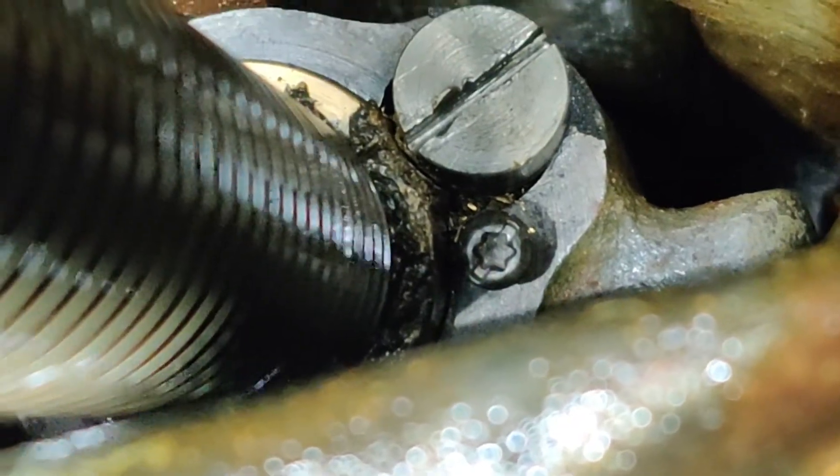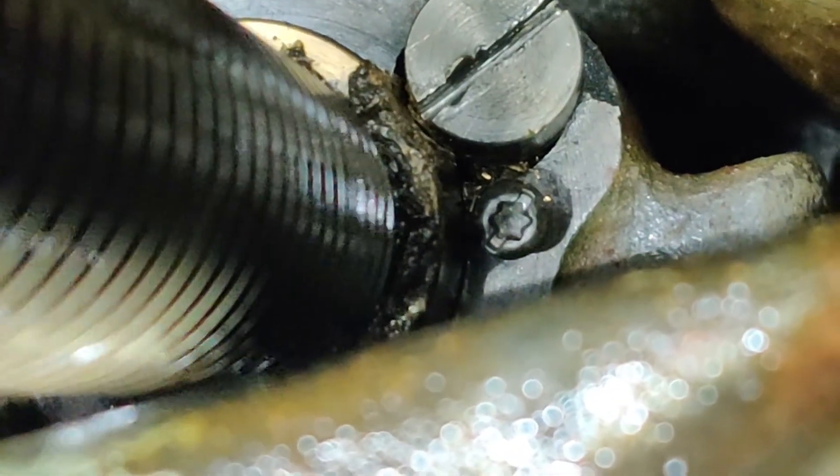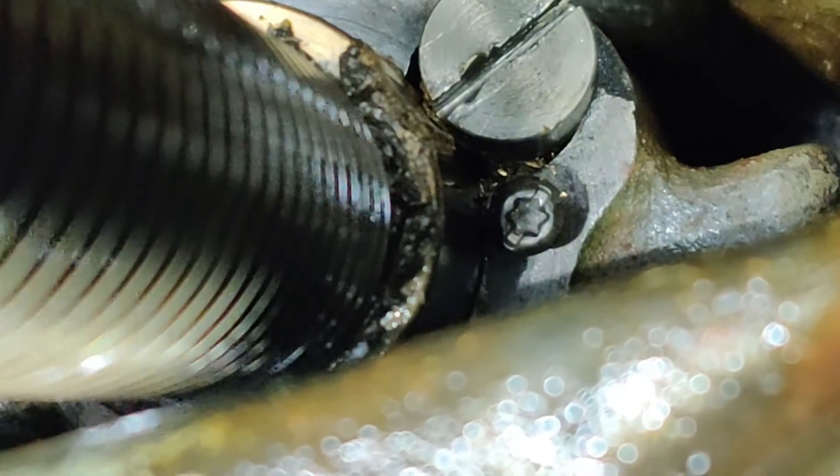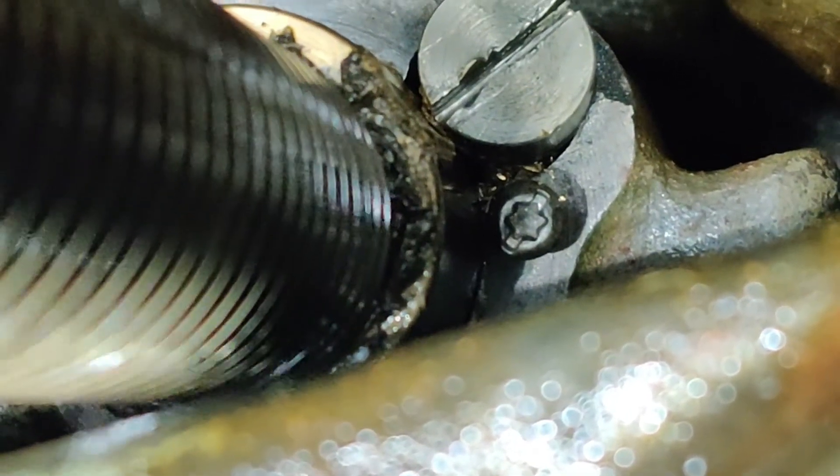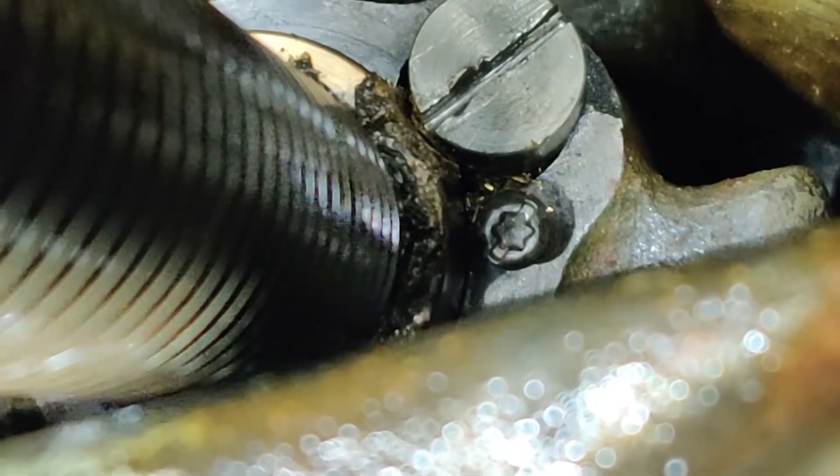And the problem there is that the massive backlash adjusting screw that you can see at the top center of the frame is canted off to one side and is jammed solid.